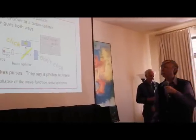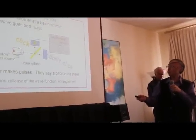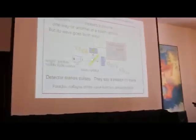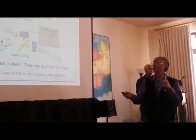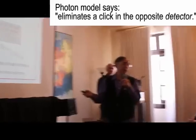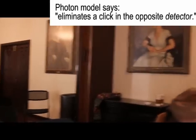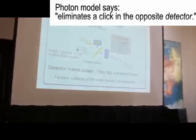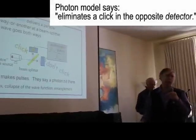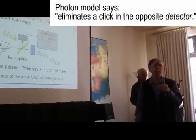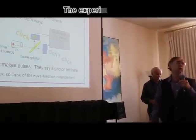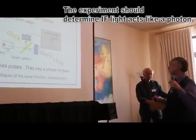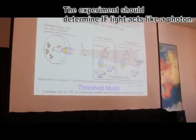The property of light — the collapse of the wave function — is supposed to be where both waves go, but particles somehow magically show up in one detector, and it supposedly eliminates the click of the opposite detector. It's the collapse of the wave function idea. People explain all these experiments in terms of photons. But this is the alternative that I have in mind.